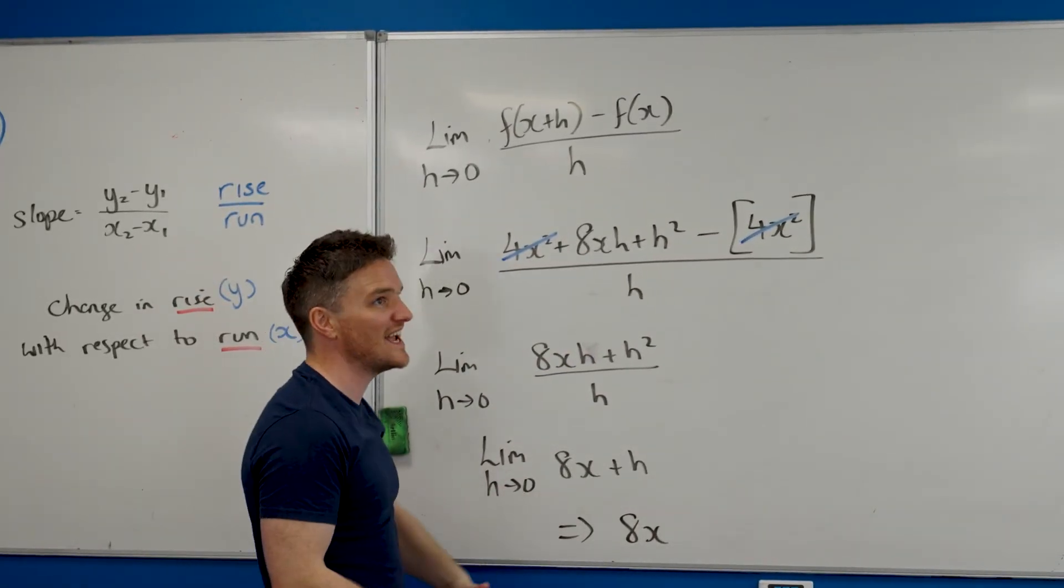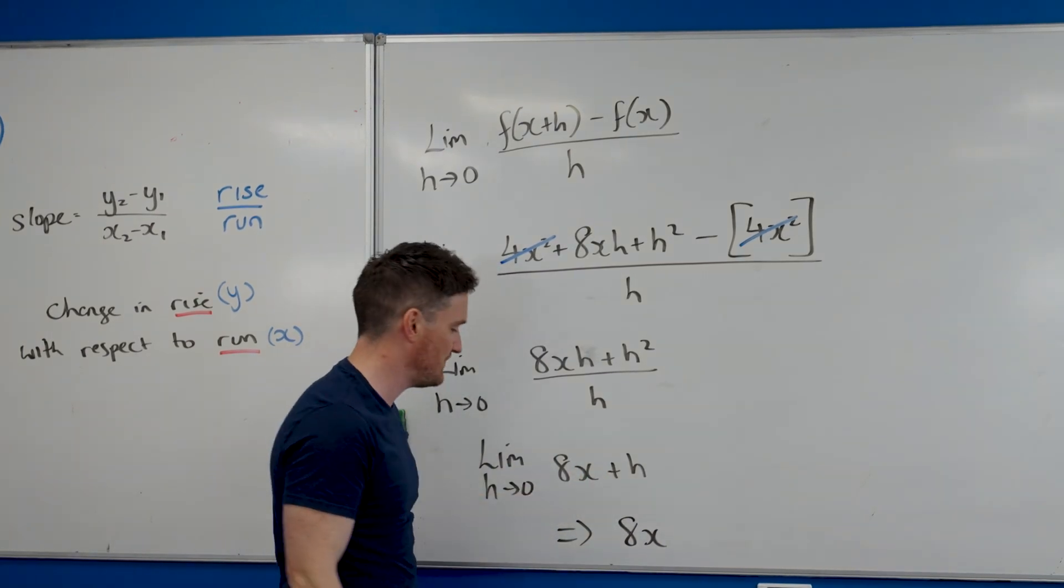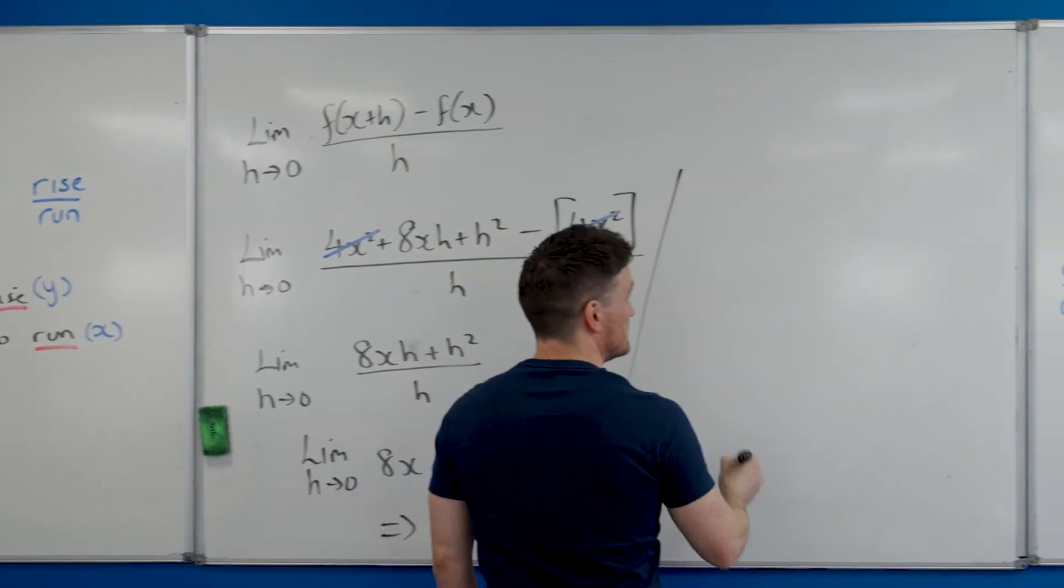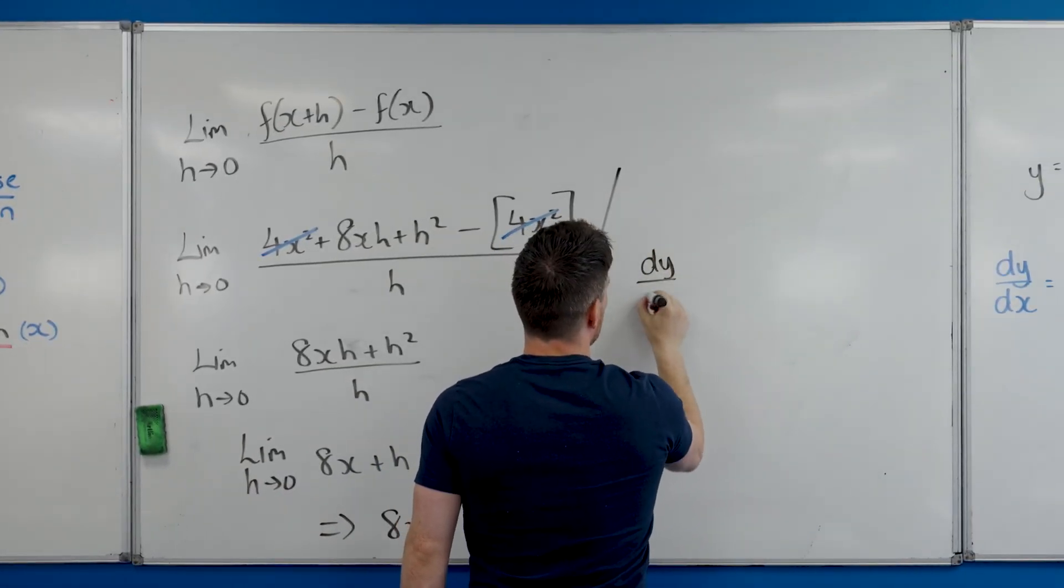So what that's saying is if I want to find the slope when x is 2, I just plug in x being 2. If I want to find the slope when x is 11, I replace x with 11, so on and so forth.